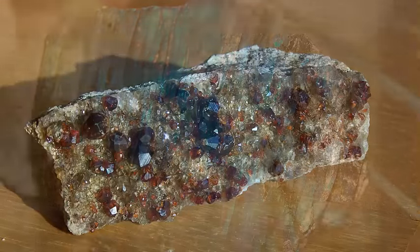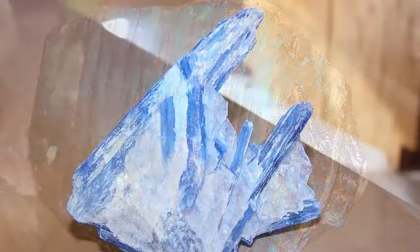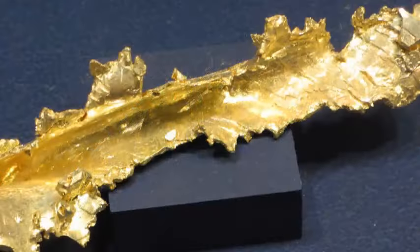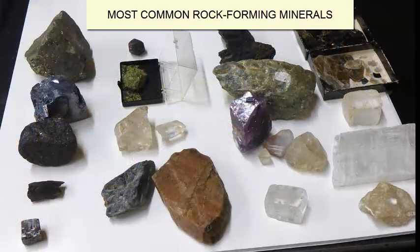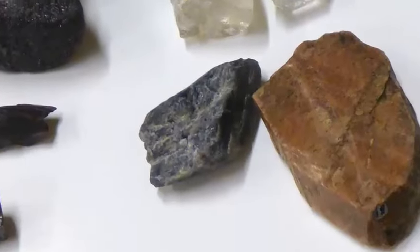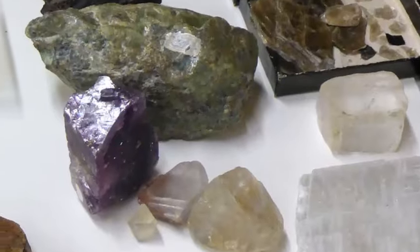There are over 300 different known minerals in the world, most of which are unique to one location or a rare set of conditions. A few dozen minerals represent the core of the most common rock-forming minerals, and those are the ones we'll review in this video. What you see here are about 20 different rock-forming minerals, representing a variety of sizes, shapes, and colors.